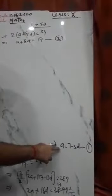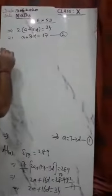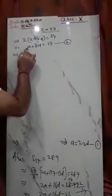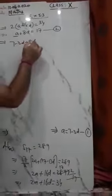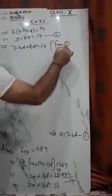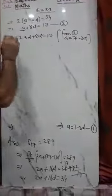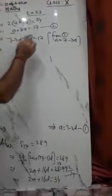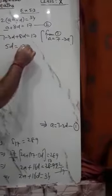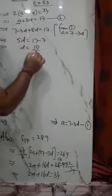Now from equation (1), a = 7 minus 3d. Substituting into equation (2): (7 minus 3d) + 8d = 17. So 7 + 5d = 17. Therefore 5d = 17 minus 7 = 10, giving d = 10 upon 5 = 2. So the common difference d = 2.